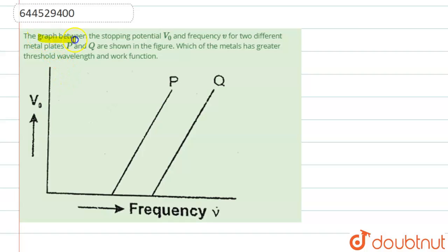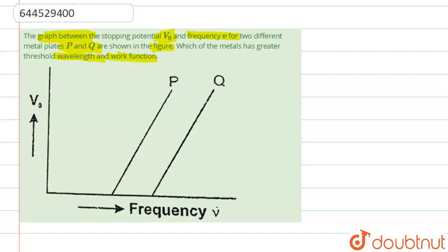The question says that the graph between the stopping potential V₀ and frequency ν for two different metal plates P and Q are given in the figure. Which metal has greater threshold wavelength and work function?